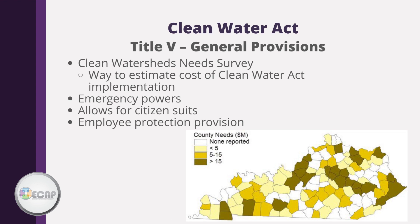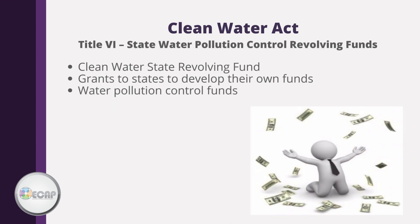Title V of the Clean Water Act covers general provisions, including the Clean Watersheds Needs Survey — an assessment of costs associated with meeting water quality goals — granting emergency powers for things such as beach closings, fish kills, and public health concerns, and allowing any U.S. citizen to file a citizen suit against any person who has allegedly violated an effluent limitation. Title V also contains an employee protection provision. Title VI refers to the State Water Pollution Control Revolving Funds, where the EPA provides grants to local states while the state contributes an additional 20%, creating a federal-state partnership providing money to municipalities for wastewater treatment, pollution control, and water protection.